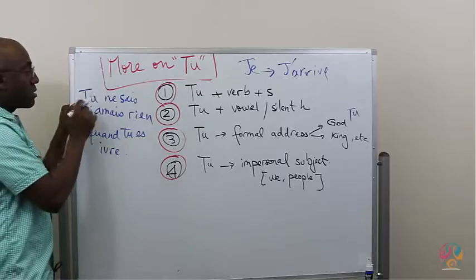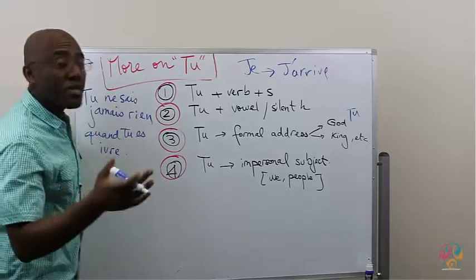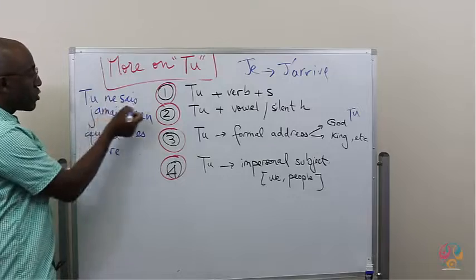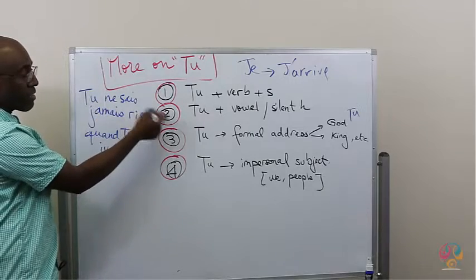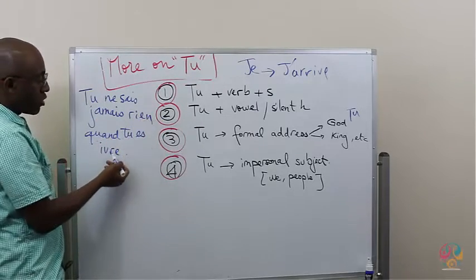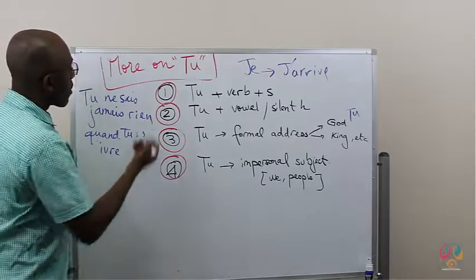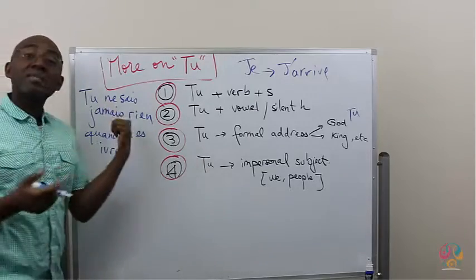If I tell you, as an example, TU ne sais jamais rien quand TU es ivre. Well, this means you never know anything when you're drunk. You never know anything, nothing, when you are drunk. Ivre. Well, when someone says something like this, it doesn't mean you, in front of me, don't know anything when you're drunk.